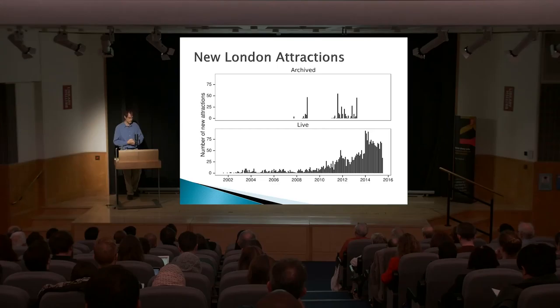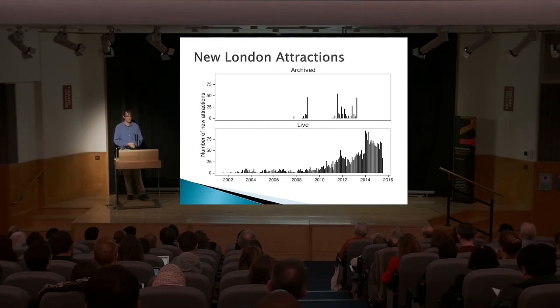It's immediately clear that there's less data in the archive than the live web. It's about a quarter — about 25%. We ran our own crawler to get the live data.